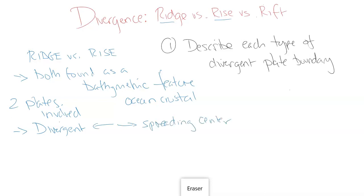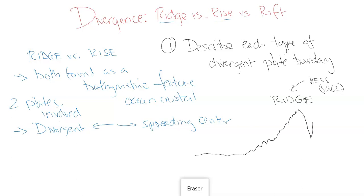The best way to explain the difference is to draw it. Looking at the ridge — found by Hess, initially by sonar in 1962, found in both the Pacific and the Atlantic. On the ocean floor, the ridge comes up pretty quickly with a little gap, then comes down and is the same on both sides. It's steeper and more pronounced — higher elevation off the ocean floor — still about 2,000 meters below the ocean surface, so hidden in the aphotic zone, where sunlight doesn't reach.